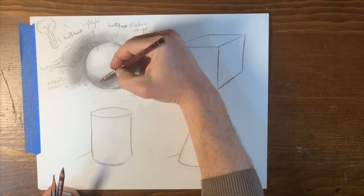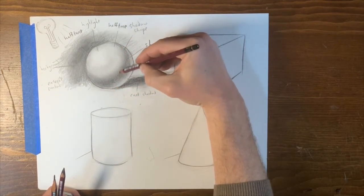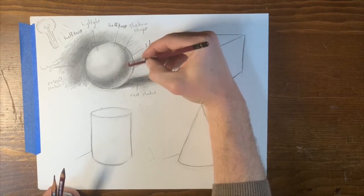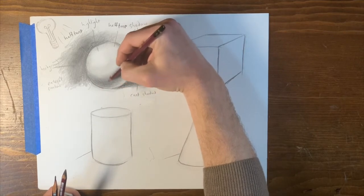And you want to carefully guard that so that the three-dimensional volume is conveyed really well. So, I'm going to strengthen that shadow just a little bit. Okay.